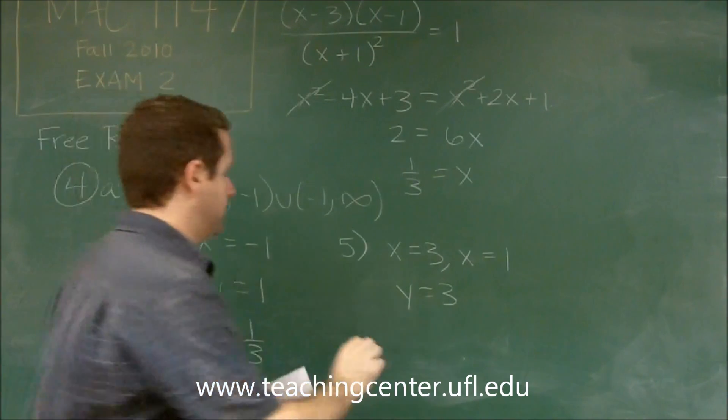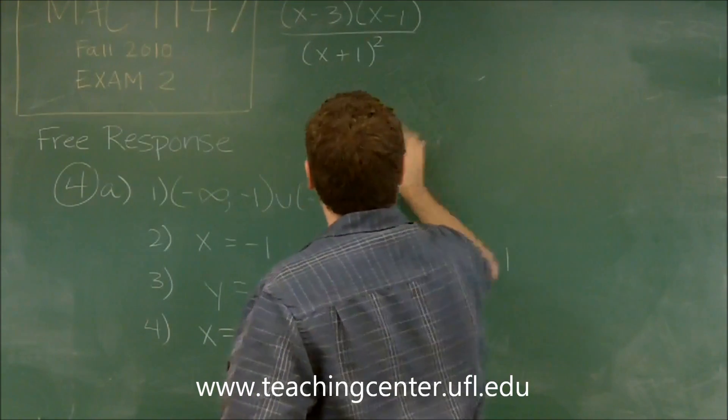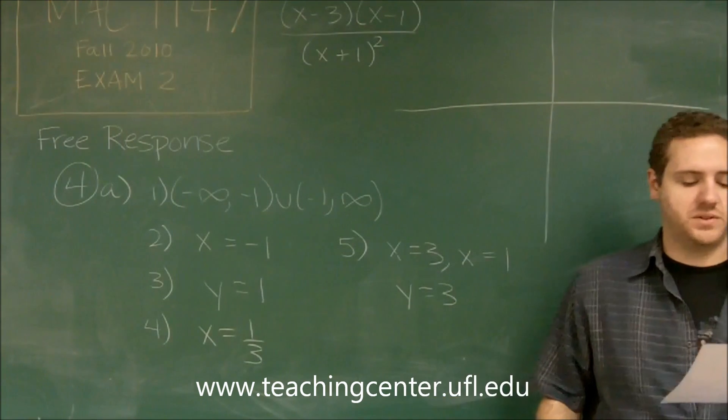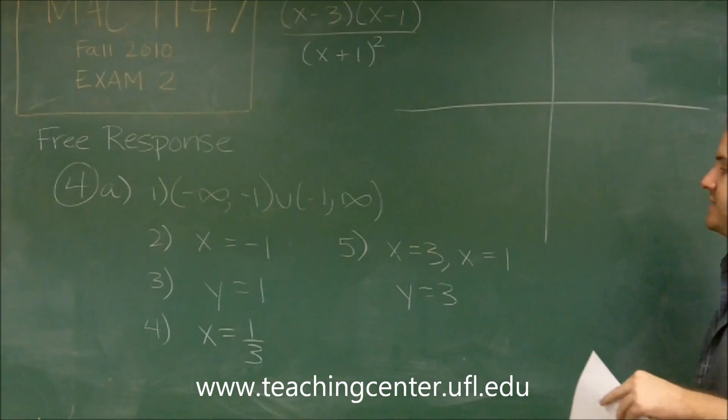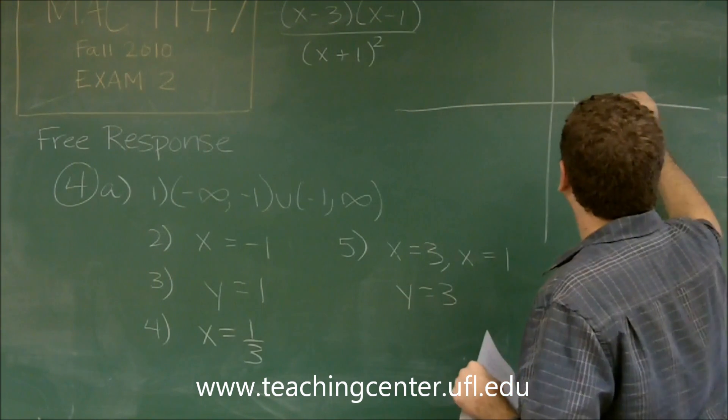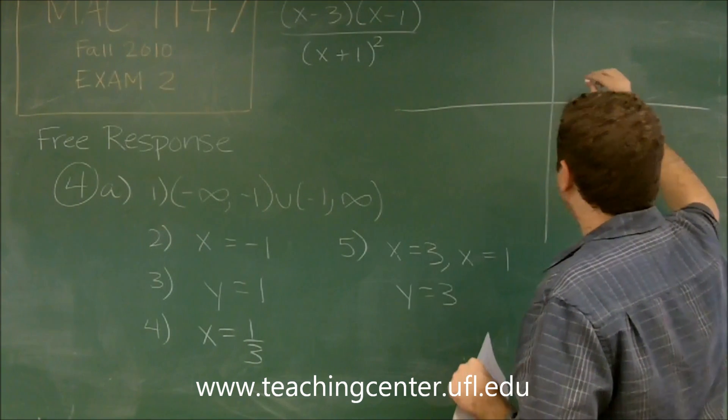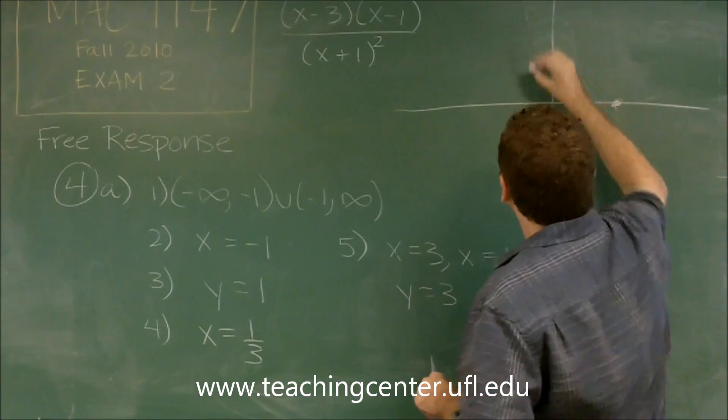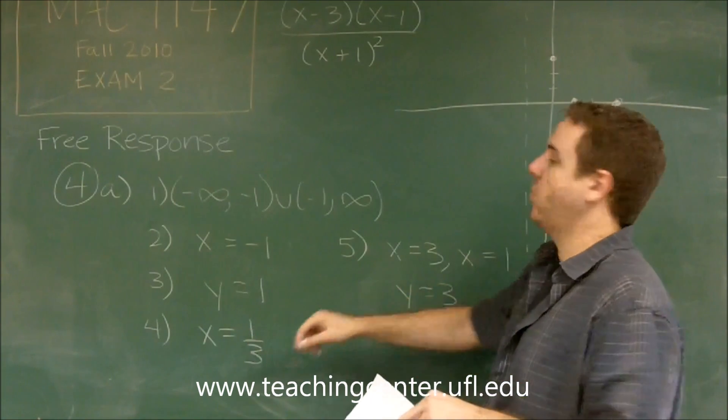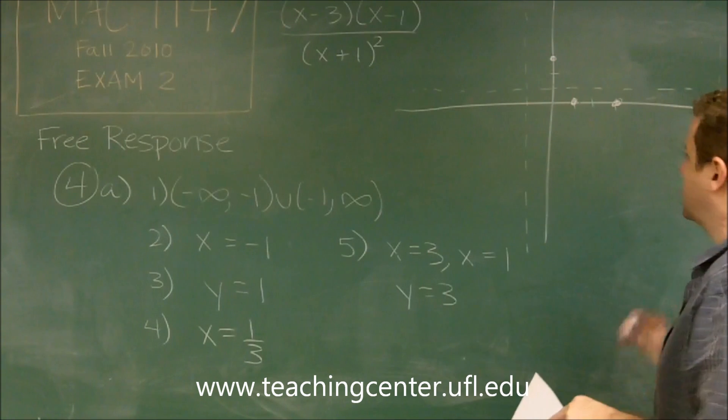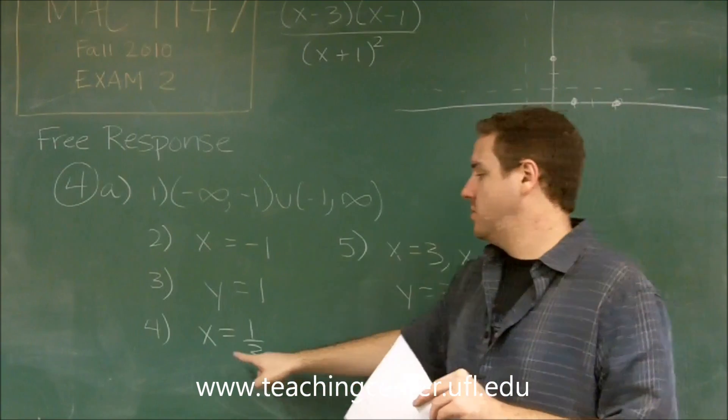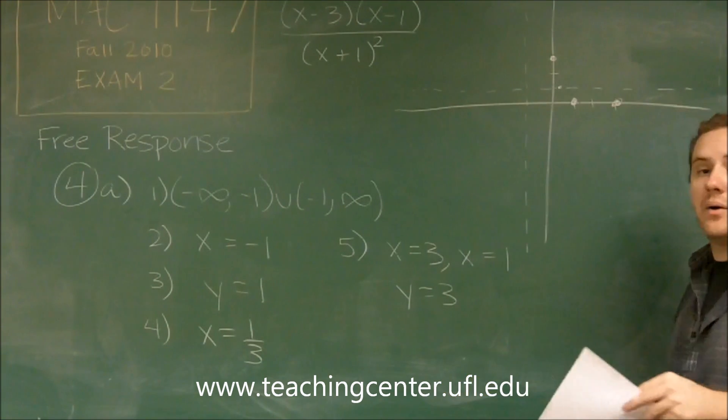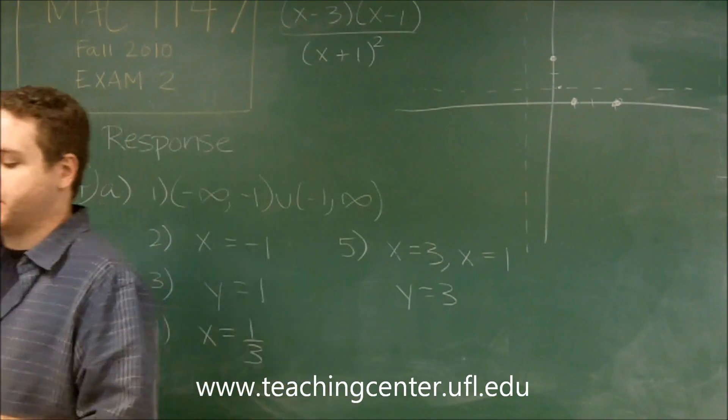The last thing we need to do is actually graph the function. I'm going to make some space over here to do just that. Every piece of information that we've figured out so far is going to help us graph this function. The first thing you should always put on it is asymptotes and intercepts. We know that x equals 1 and x equals 3 were our intercepts. We know that y equals 3 was our y-intercept. We know that we have a vertical asymptote at x equals negative 1, and a horizontal asymptote at y equals positive 1. We know that our horizontal asymptote was crossed at x equals 1 third, so somewhere around here we are going to actually be crossing our horizontal asymptote.